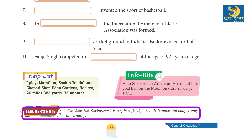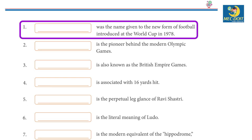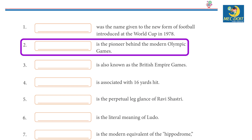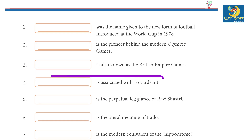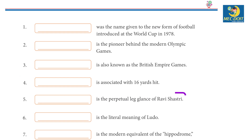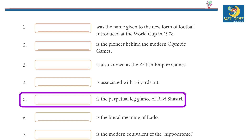Teacher's note: Elucidate that playing sports is very beneficial for health — it makes our body strong and healthy. Fill in the blanks: 1. ___ was the name given to the new form of football introduced at the World Cup in 1978. 2. ___ is the pioneer behind the modern Olympic Games. 3. ___ is also known as the British Empire Games. 4. ___ is associated with the 16-yard hit. 5. ___ is the perpetual leg glance of Ravi Shastri.